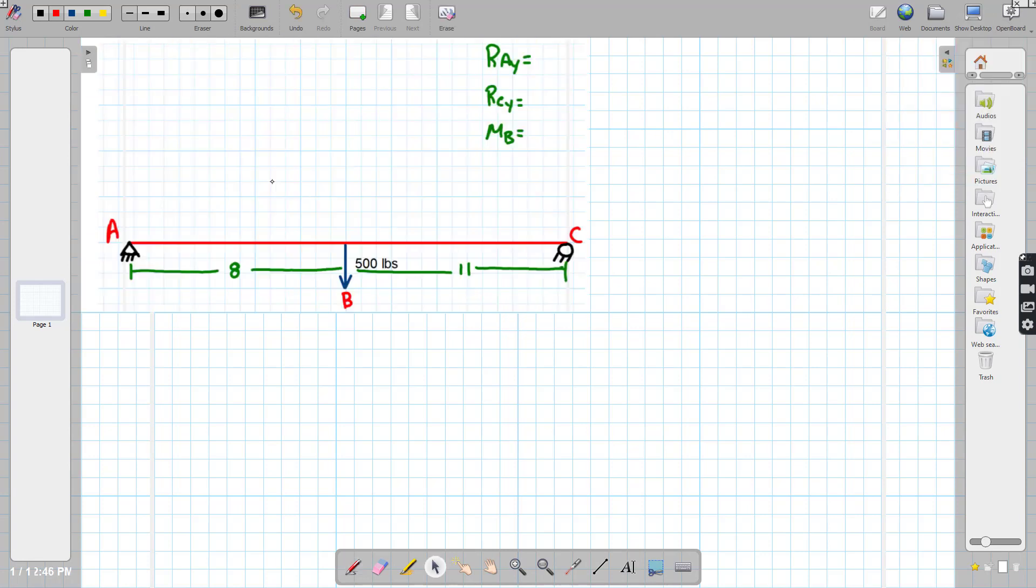We are trying to calculate the moments here or the reaction forces. So we need to kind of remember back to a previous class. This over here, this is a pin joint and this one is a roller.